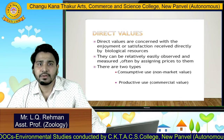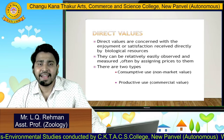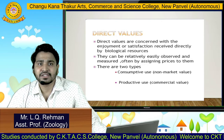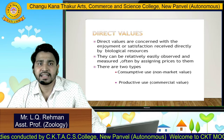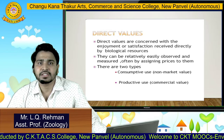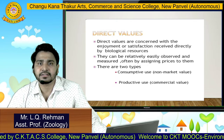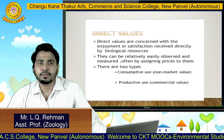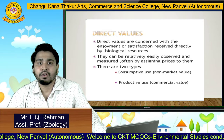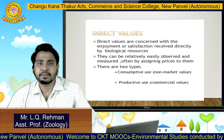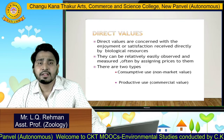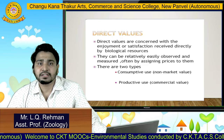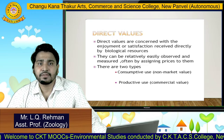What are direct values? Direct values are concerned with the enjoyment or satisfaction received directly by biological resources. They can be relatively easily observed and measured, often by assigning prices to them. Direct values are of two types: consumptive use and productive use.